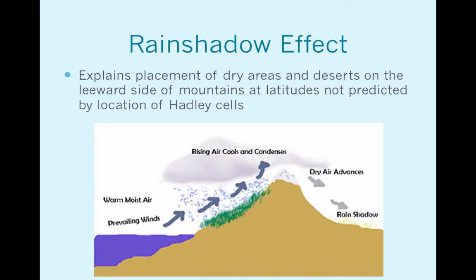The rain shadow effect explains the placement of dry areas and deserts on the leeward side of a mountain at latitudes not predicted by the location of the Hadley cells. You need an ocean and a mountain. Going from left to right: you have water blowing across the ocean and hitting the mountain — when it hits, it's warm and moist, loaded with water vapor. Then it gets shunted up the mountain, following the incline to the top. As altitude increases it gets colder, so the water vapor condenses and eventually rains, releasing all the water from that air blowing up the mountain.